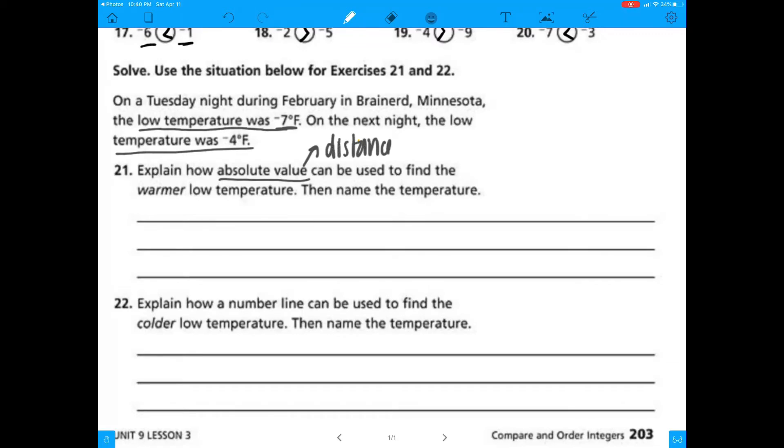Okay, Tuesday night during February in Brainerd, Minnesota, the low temperature was negative 5 degrees Fahrenheit. On the next night, the low temperature was negative 4. So again, absolute value is distance from 0. You would see it looking like this.